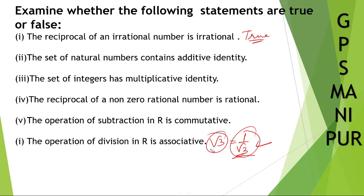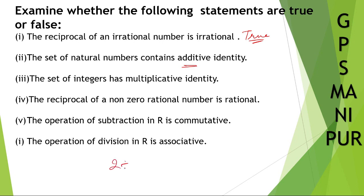Second: the set of natural numbers contains additive identity. For this, we need to understand what is additive identity. If we add something like 2 plus 0 is equal to 2, or 4 plus 0 is equal to 4. So if we add 0 to any number, then it will become the number itself. So 0 is called additive identity.